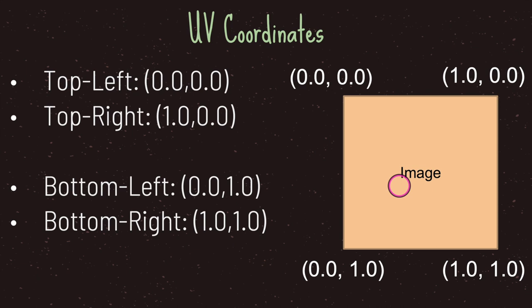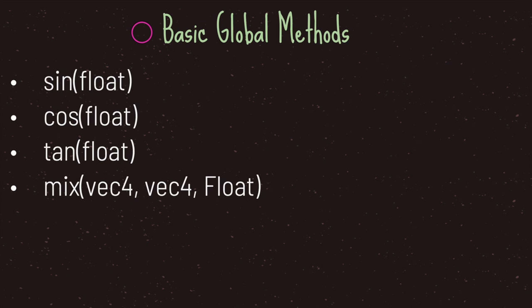Godot comes with many different methods. I'm going to introduce four. The first is the sine method, which takes in a float value. The second is the cosine method. The third is the tangent method. The last is the mix method, which takes in two vec4 data types as the first two arguments and a float as the last argument. With the mix method you can create moving gradients, which we'll look at later.